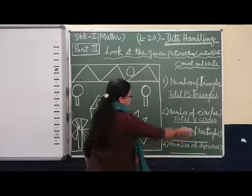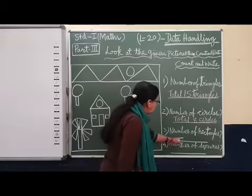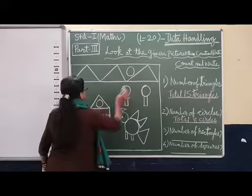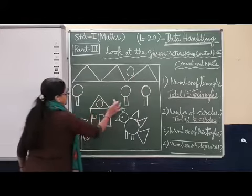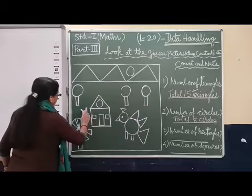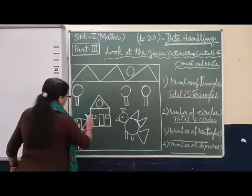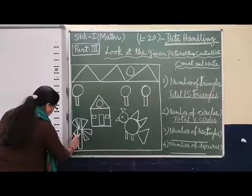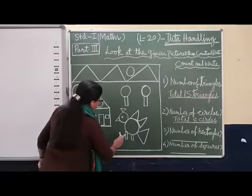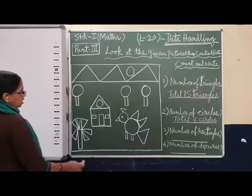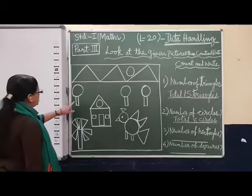Now, next question, number of rectangles. Yes, here number of rectangles. Here number of rectangles: one, two, three, then four, this five, this is six, this is seven, eight. Total eight rectangles are there. Let me check once again.